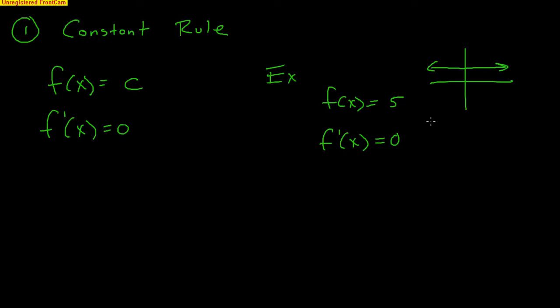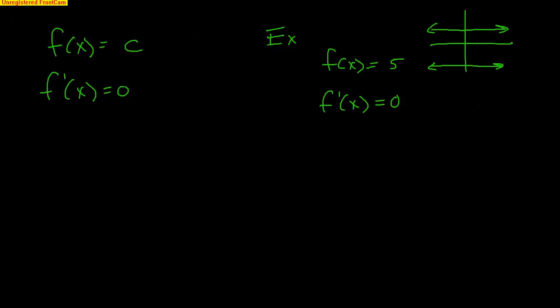Remember, what is a derivative? It is the slope of a tangent line at any given point. So that's why when you have a straight line like five, the derivative is zero. Or a straight line like negative five — the derivative of negative five is also zero because the slope is zero. That's our first rule of derivatives — the constant rule.